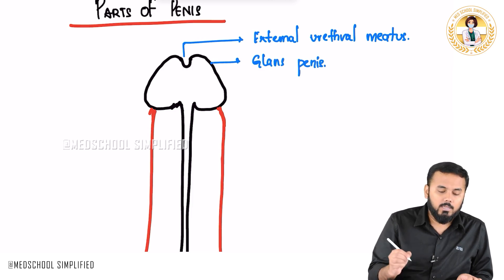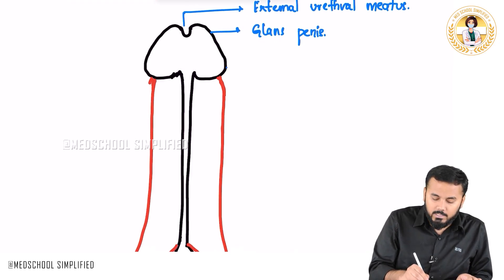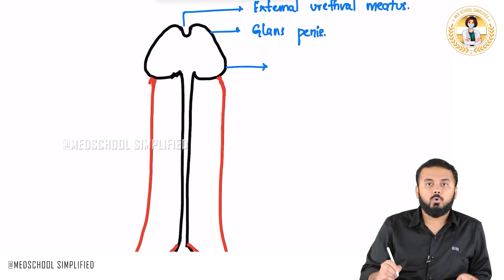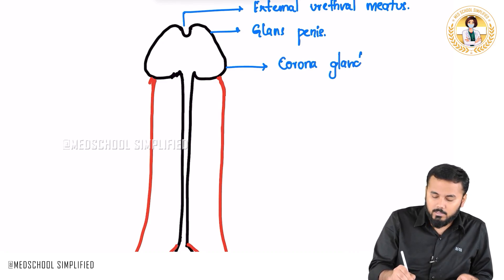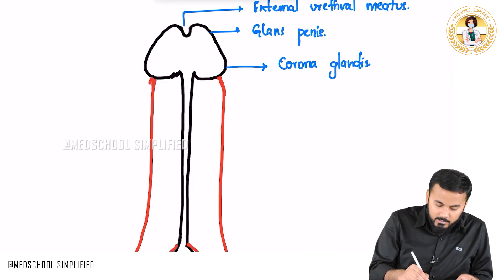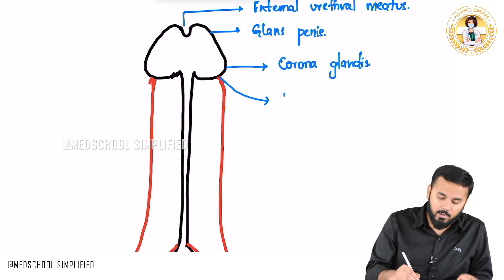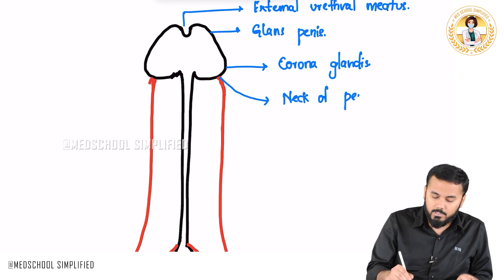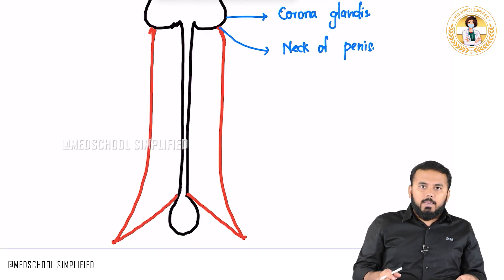This part of the penis is called the glans penis. This round part over here is called corona glandis. After that this part which seems like a neck is called the neck of the penis.